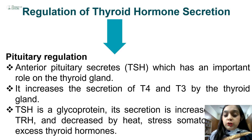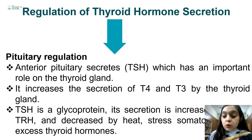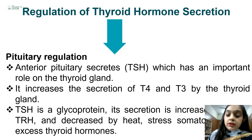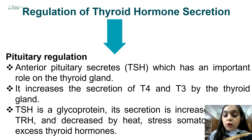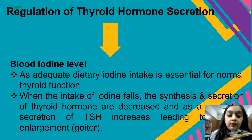TSH is a glycoprotein and its secretion depends upon TRH. TRH secretion increases the release of TSH in the body. In cold conditions, TSH production naturally increases from the pituitary gland. Conversely, when there is excess heat, increased temperature, stress, somatostatin, or increased thyroid hormone levels, TSH production from the pituitary gland is reduced.